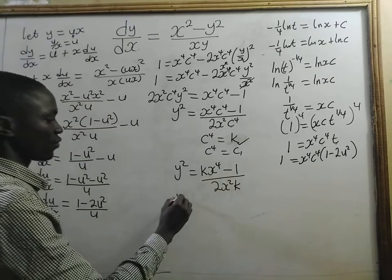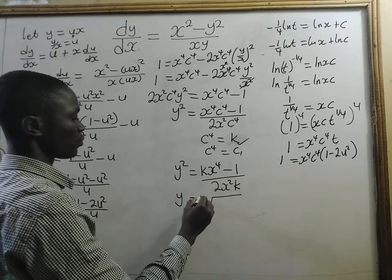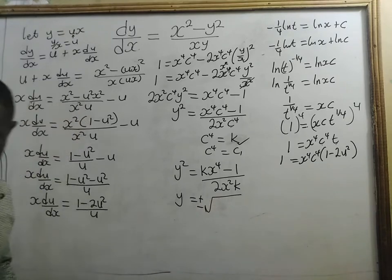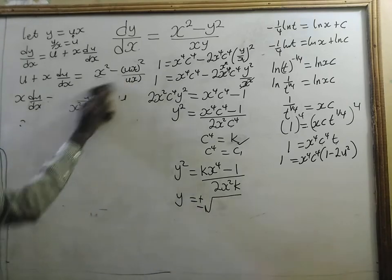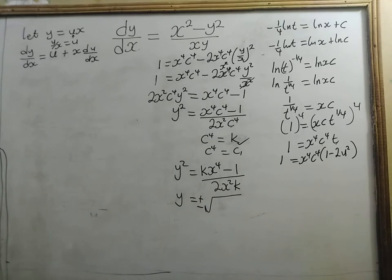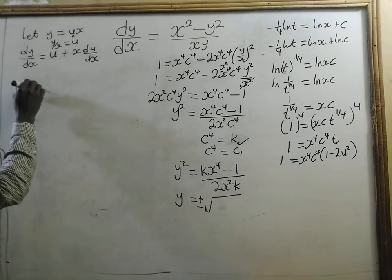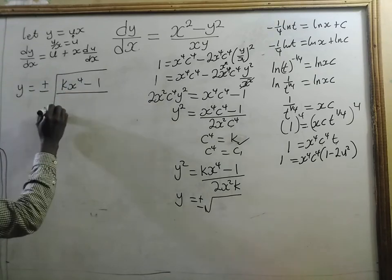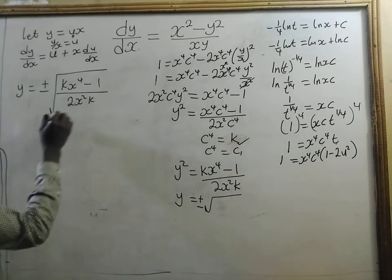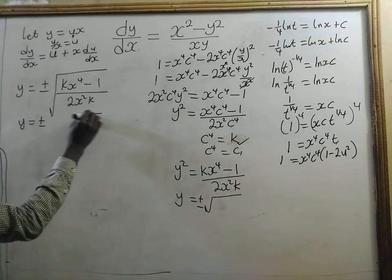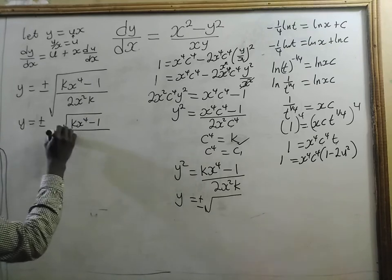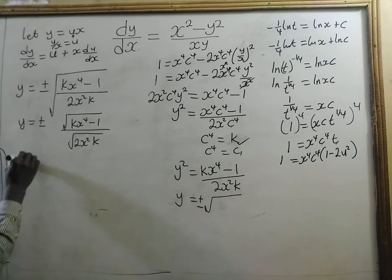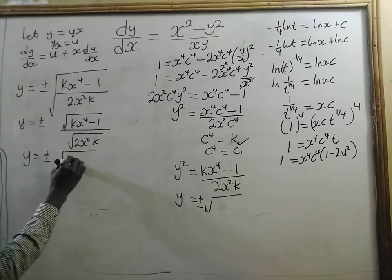Taking the square root of both sides, y equals plus or minus the square root of (kx to the power 4 minus 1) divided by (square root of 2 times x squared times k).